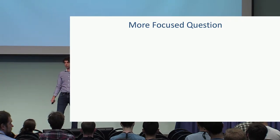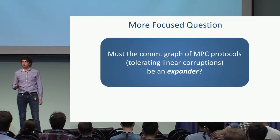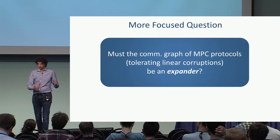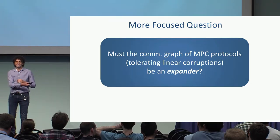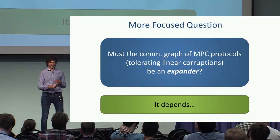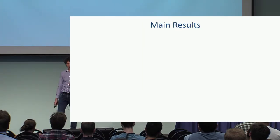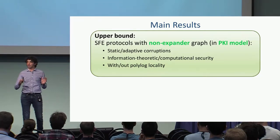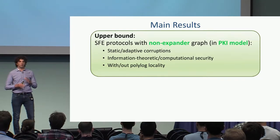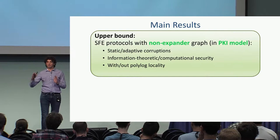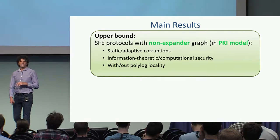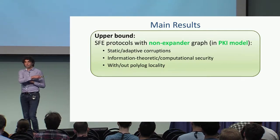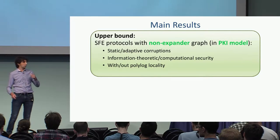We can now look at a more focused question: must the communication graph of a secure protocol tolerating a linear number of corruptions be an expander? Like everything in life, the answer depends. Our main results: first, we show an upper bound — a very large class of protocols where the communication graph is not an expander in a very strong sense. These upper bounds work in the PKI model, requiring some form of trusted setup, and hold across many settings: static corruption, adaptive corruption, information-theoretic, and computational protocols, with or without small locality.